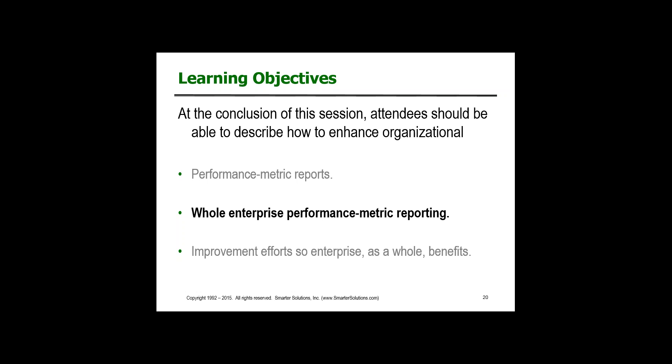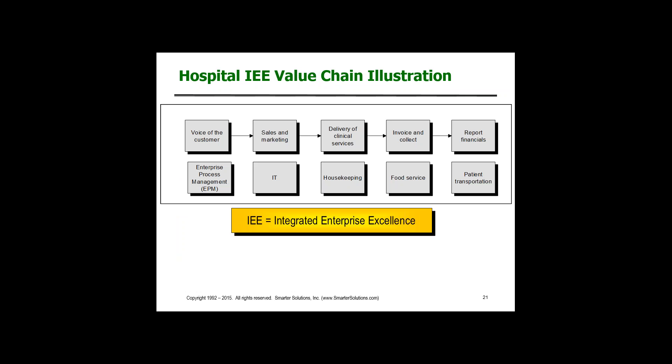Now let's start talking about how we can have one-room metric reporting throughout the organization. I'm suggesting you start with your value chain — this is what you do and how you measure what you do. The boxes connected with arrows are the major functions in the organization. I'm using a hospital value chain for illustration. The functions include: voice of the customer, sales and marketing, deliver clinical service, invoice and collect, report financials, and support functions like IT and house team meetings.